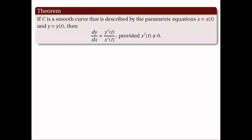This theorem gives us an expression for the slope of a tangent line to a parametric curve. It states that if C is a smooth curve described by the parametric equations x equals x of t and y equals y of t, then dy over dx is given by y prime of t over x prime of t, provided that the denominator x prime of t is non-zero.